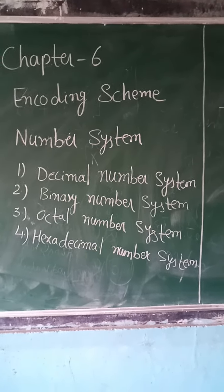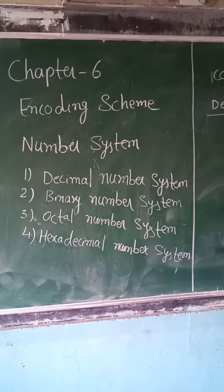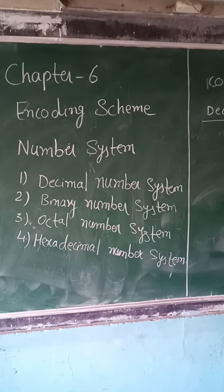Now what is decimal number system? Decimal number system is the number system that has base 10, that is 0 to 9 numbers are included in decimal number system.